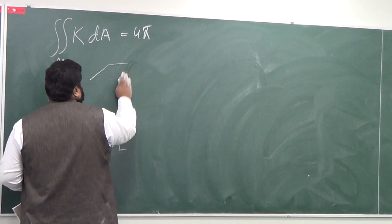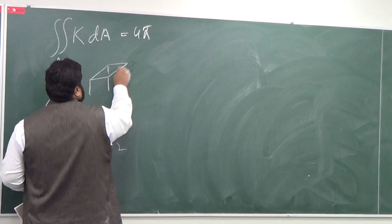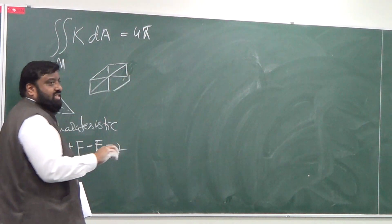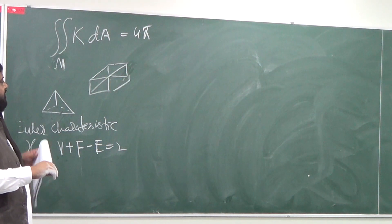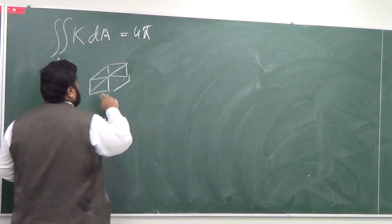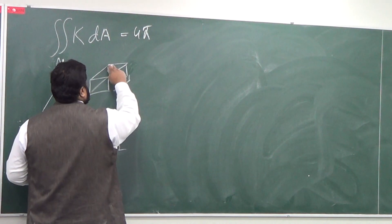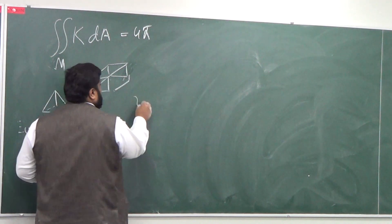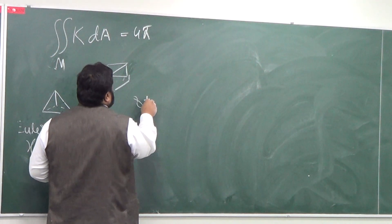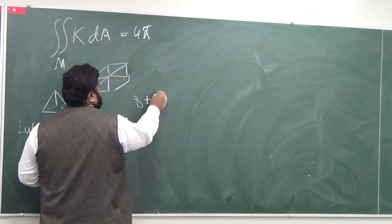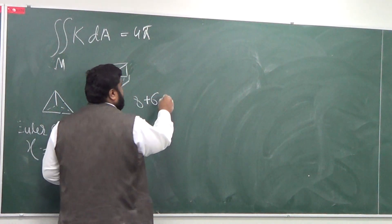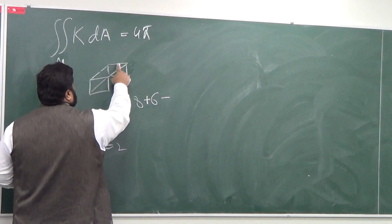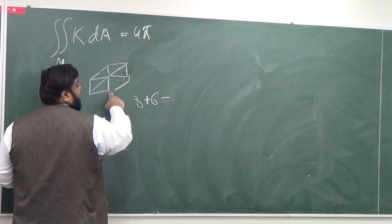A box is also a kind of solid. So do the same: 8 vertices plus 6 faces minus 12 edges. Let's count the vertices: 1, 2, 3, 4, 5, 6, 7, 8 — so 8 vertices. The faces: 1, 2, 3, 4, 5, 6 — 6 faces. And the edges: 12. So 8 plus 6 minus 12 equals 2 again.